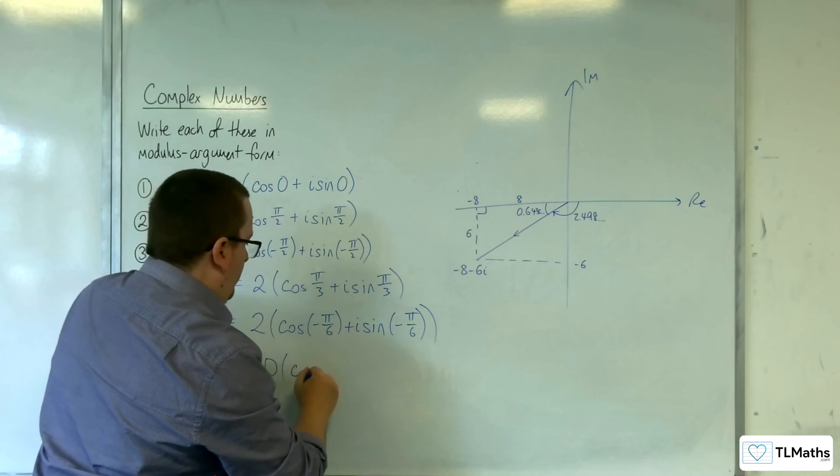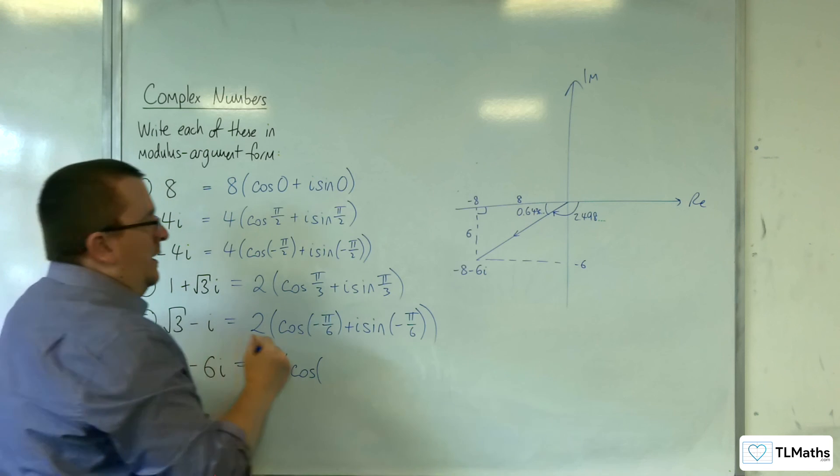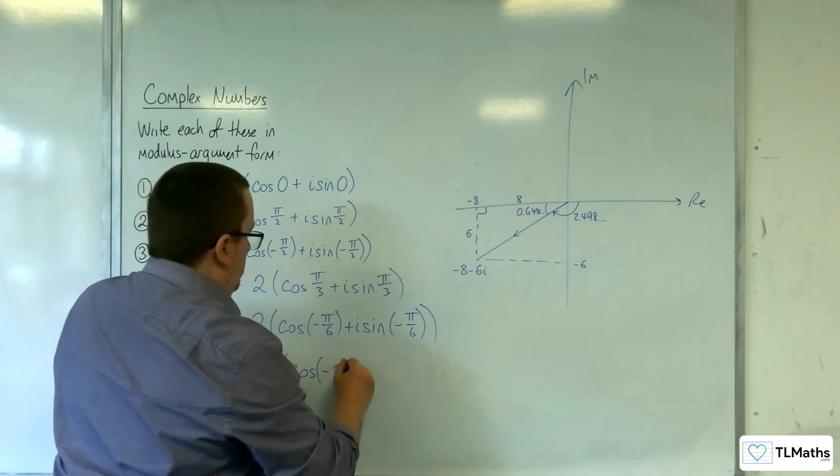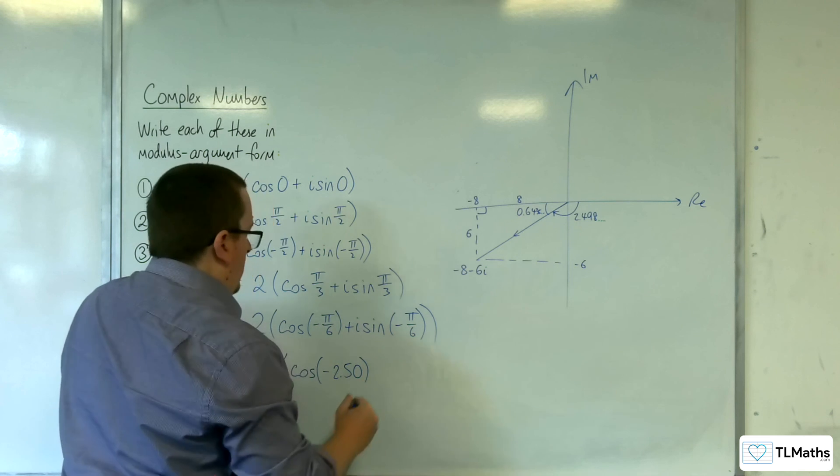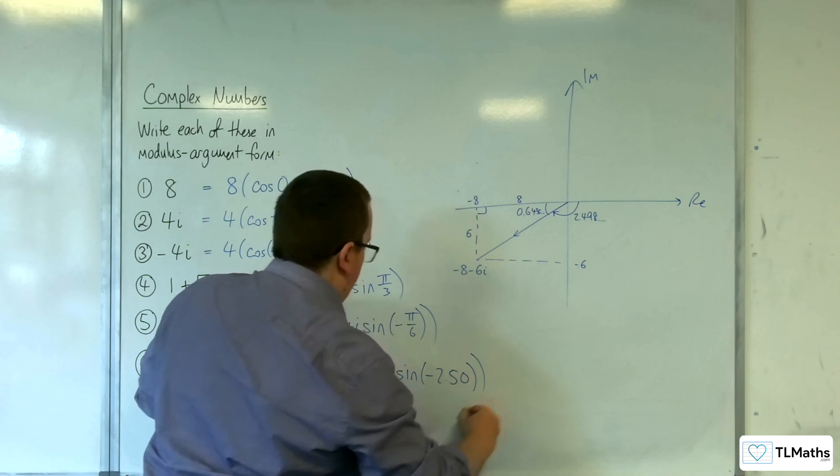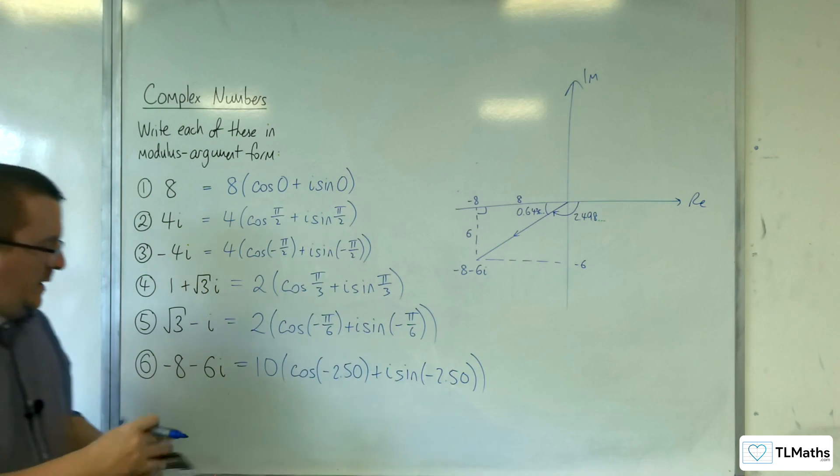So cosine—I'll write them to 3 sig fig—so minus 2.50 plus i sine minus 2.50.